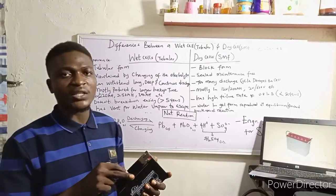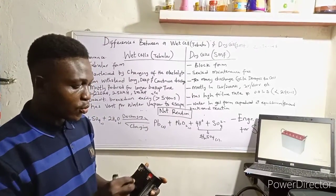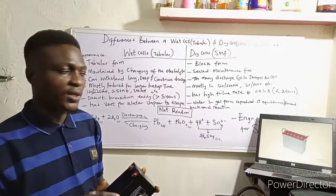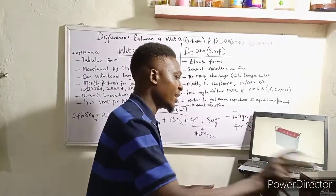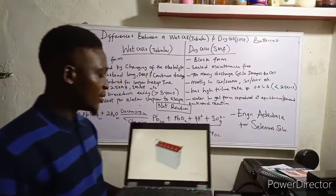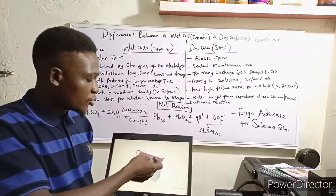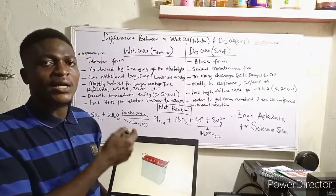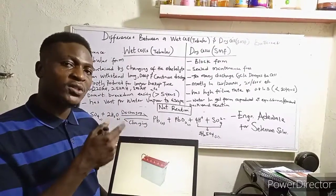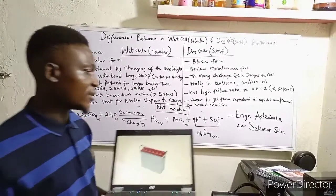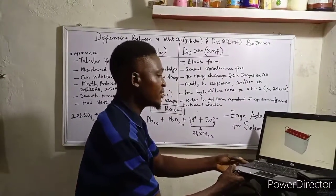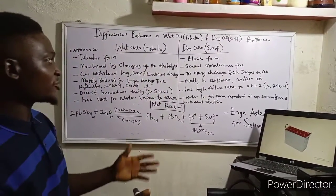Unlike the dry cell, the wet cell has a vent for water vapor to escape, and also through these vents you can add clean and pure distilled water into the battery cells. Now today I'll be explaining the differences between these two batteries.